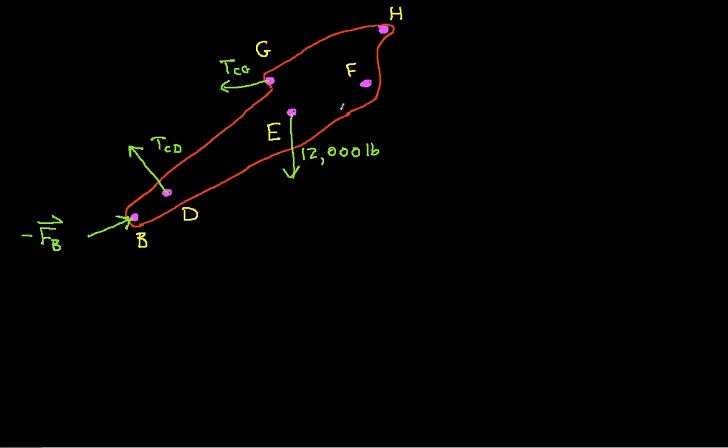We have the reaction force at F, and we know nothing about this, so I'll just draw it as an unknown vector and call it F sub F. And we have the tension in this hydraulic cylinder that's connected to H. And I'll call this THI. We don't know this tension. But we do know the direction, at least we can figure that out.